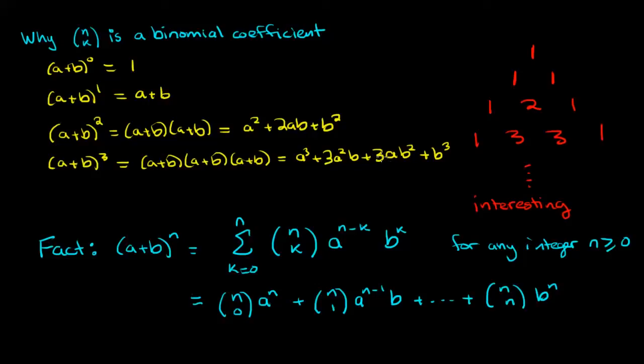Similarly the next coefficient is 3 because that's 3 choose 2, and again the power of a has decreased and the power of b has increased. And our final term has a b to the power of 3 with a coefficient of 1 and that's like 3 choose 3.